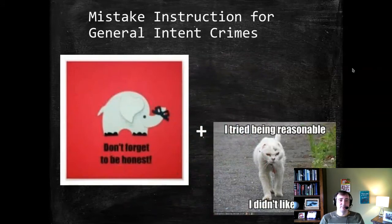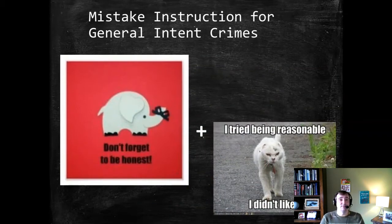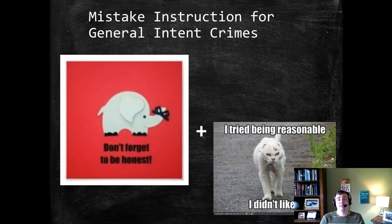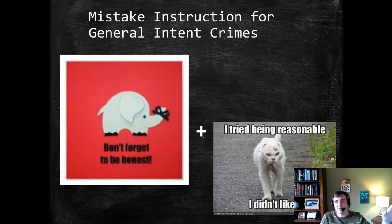In contrast, for general intent crimes, the prosecution has two different paths to a guilty verdict. They can follow the same route — showing the defendant was not honestly mistaken — but they're also given an opportunity to use an objective standard: a reasonable person test. Even if the defendant was honestly mistaken, the prosecution can show that the mistake wasn't reasonable, wasn't a mistake a reasonable person would make. Specific intent is a subjective test; general intent is an objective test, although it can also be proven subjectively.